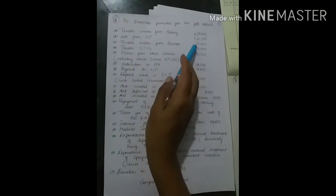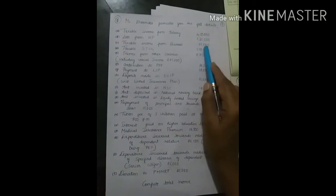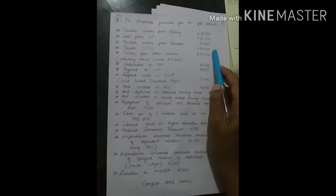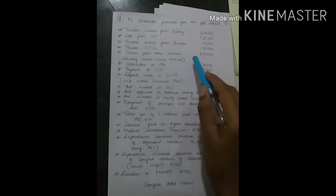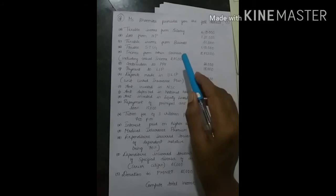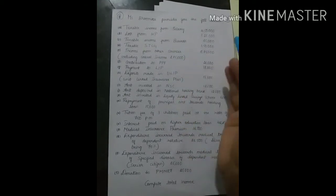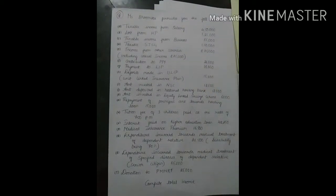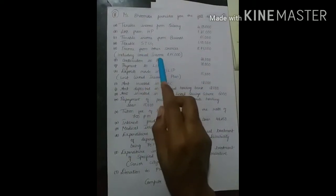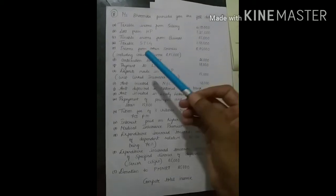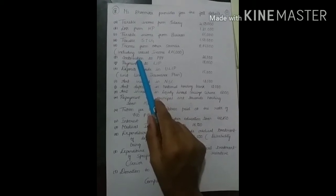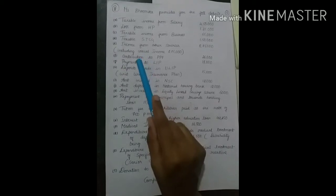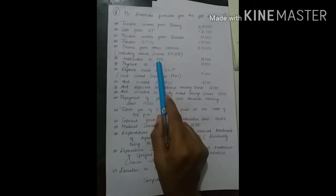Taxable income from business 65,000. Taxable STCG one lakh fifty thousand, which comes under capital gains. Income from other sources eight lakh seventy five thousand, including casual incomes two lakh seventy five thousand. The casual income is included, so we have to bifurcate it, we have to divide it, because the reason here is the deductions cannot be availed from casual incomes. That means the deductions will be added back. One by one expenses which will be considered as deductions under each category of sections.